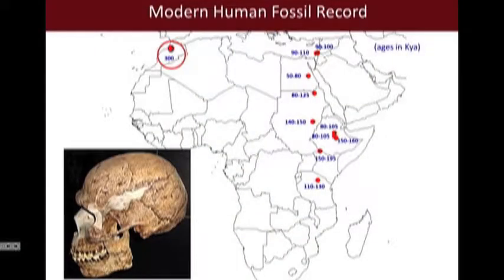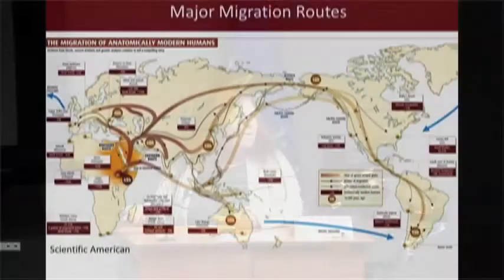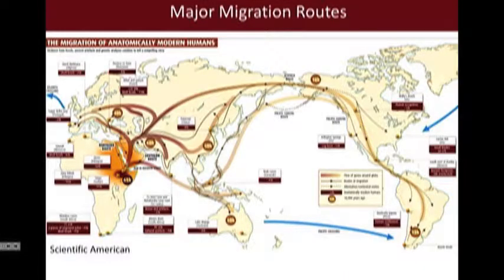To understand why we see differences in genetic variants that play a role in disease risk, I have to start with human origins. These red dots represent the location of anatomically modern humans that originated in Africa—the oldest recently dated to about 300,000 years ago. After this origin in Africa, sometime between 50,000 to 80,000 years ago, there was a migration of relatively small numbers of people—possibly in the hundreds to thousands—out of Africa, giving rise to all other populations.